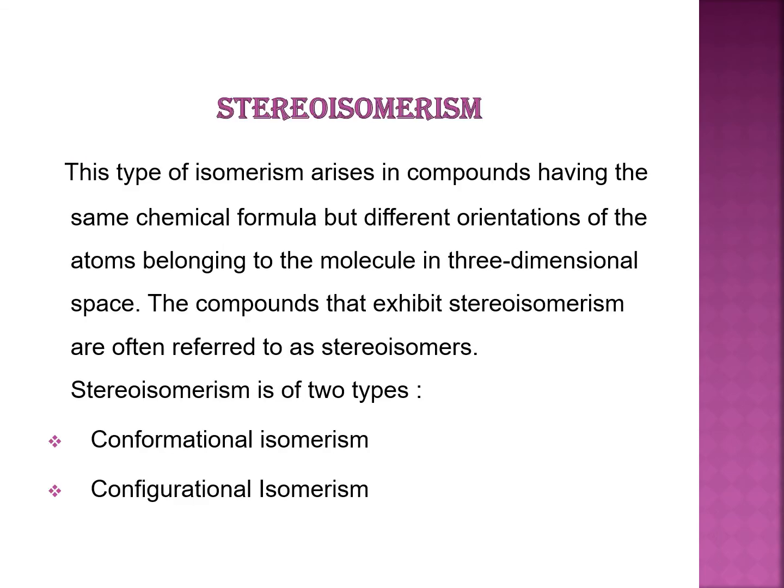Next, stereoisomerism. This type of isomerism arises in compounds having the same chemical formula but different orientation of the atoms belonging to the molecule in three-dimensional space. The compounds that exhibit stereoisomerism are often referred to as stereoisomers.